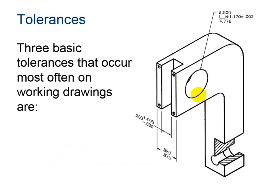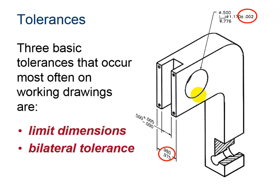There are three basic tolerances that occur most often on working drawings: limit dimensions, bilateral tolerance, and unilateral tolerance. Let's look at these individually so you can understand the differences.